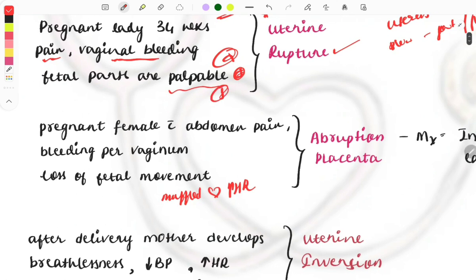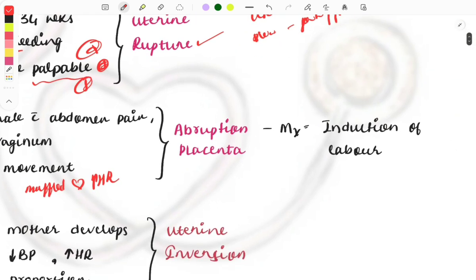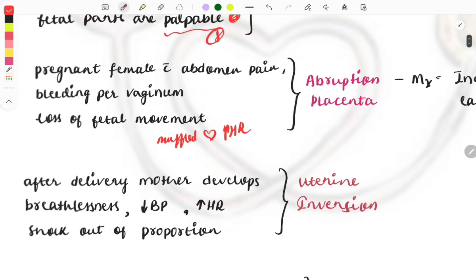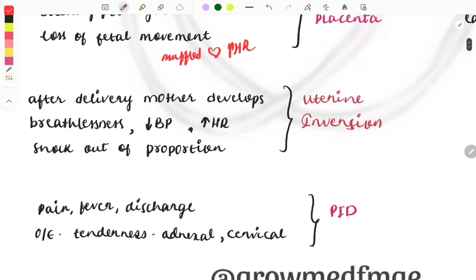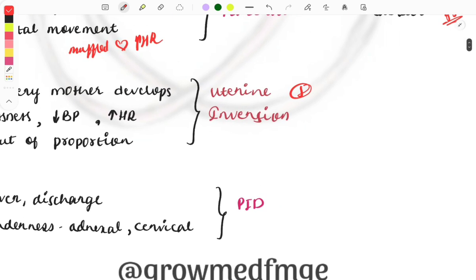This is the main differentiating factor between uterine rupture and abruption. Management is immediate induction of labor. After delivery, mother develops breathlessness, decreased BP, increased heart rate, shock out of proportion - this presentation will be present with uterine inversion because in uterine inversion the whole uterus will be inverted and come out.